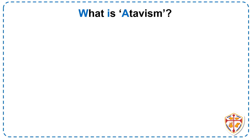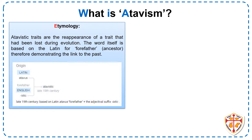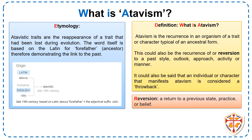So what is atavism? Let's explore the etymology of our big idea and develop our understanding of what this really means. Atavistic traits are the reappearance of a trait that has been lost during evolution. The word itself is based on the Latin for forefather or ancestor and therefore demonstrates a link to the past.